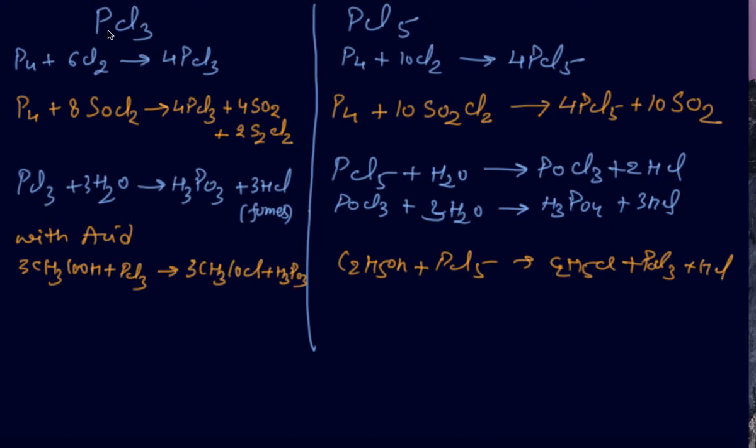Hello students, now the next compounds of phosphorus: one is PCl3, phosphorus trichloride, and another is PCl5. We can form them by the simple action of phosphorus with chlorine. We are getting PCl3 here and PCl5 here.